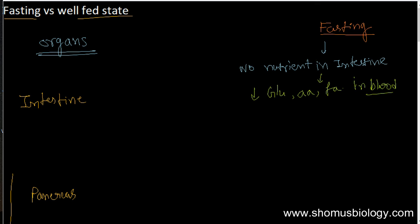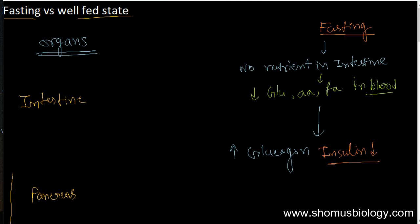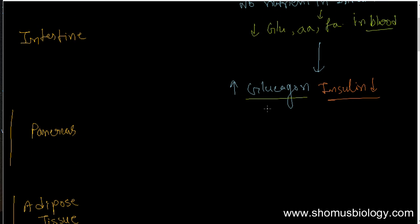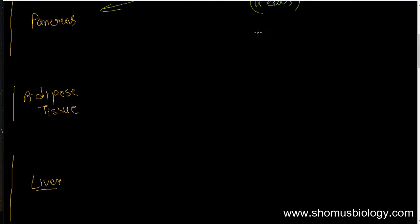Whenever there is a low amount of glucose in blood, that signals the pancreatic alpha cells to release glucagon. So glucagon concentration increases and insulin concentration decreases. The job of glucagon is to release glucose into the bloodstream. The pancreas starts secreting glucagon from the alpha cells, and it also inhibits insulin synthesis by the beta cells.